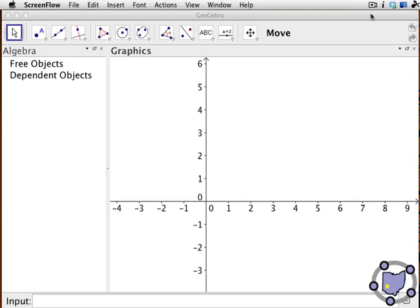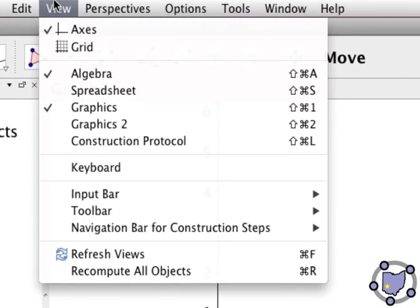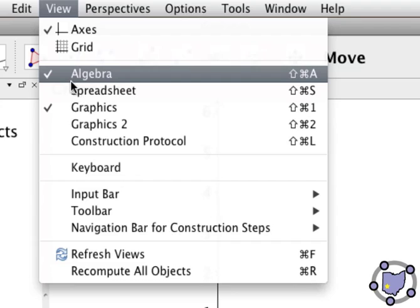So we're going to begin by opening up a new GeoGebra window and we want the algebra view to be visible. You're going to go under view and make sure algebra is checked.